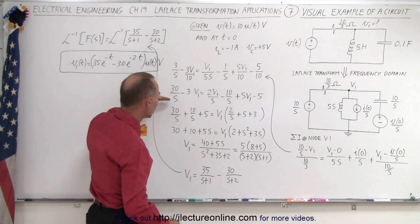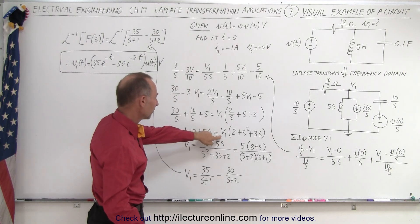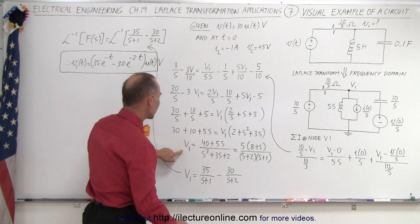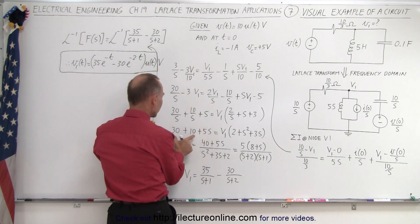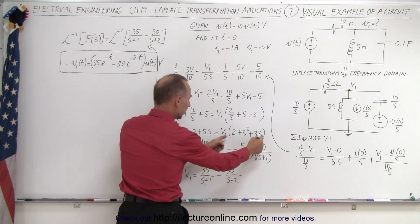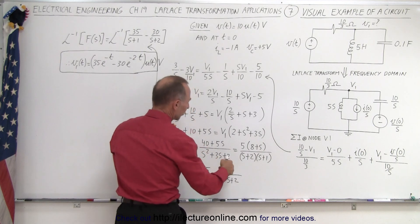Then we continue to simplify the equation to isolate V1. V1 is going to be equal to the left side equation, which is 40 plus 5S, divided by this quantity right here.